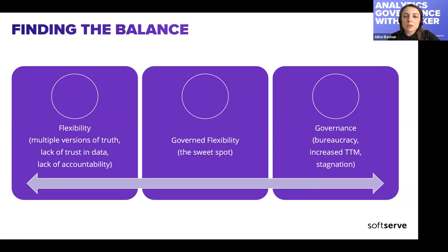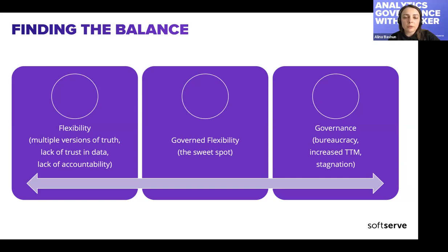At some point, business users and managers will ask: why do we have five different answers to the same question — for example, trying to understand the revenue of the company — depending on which dashboard we're looking at or which department we're talking to? That leads to a lack of trust in data, because you have multiple versions of the truth. It also opens up risks your organization may be exposed to, including legislative requirements to report data publicly — and if you report different figures for the same metric...